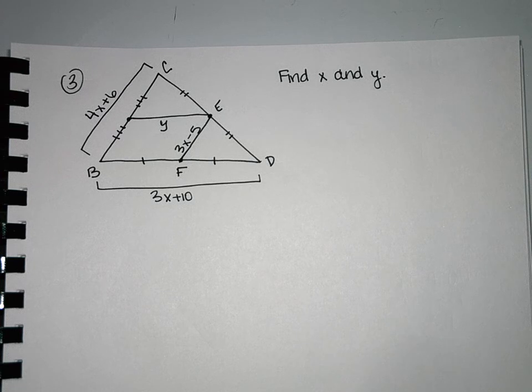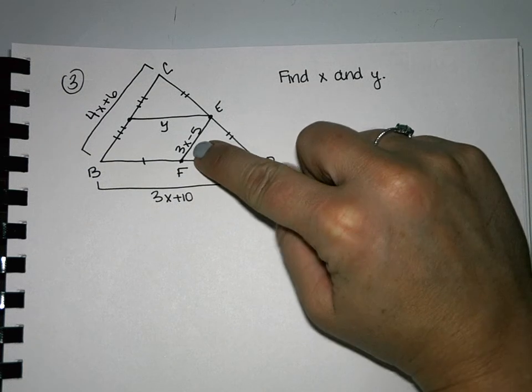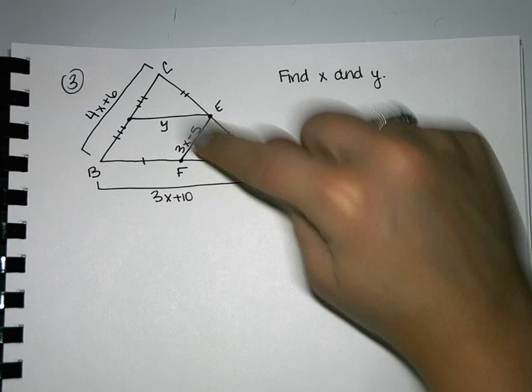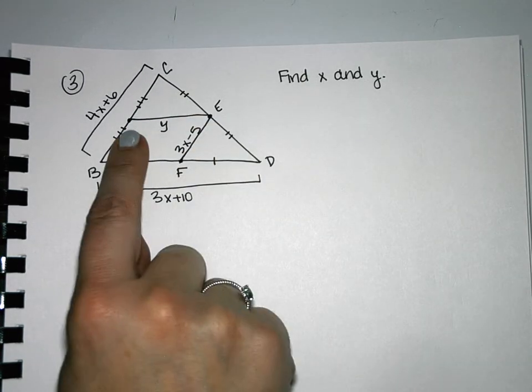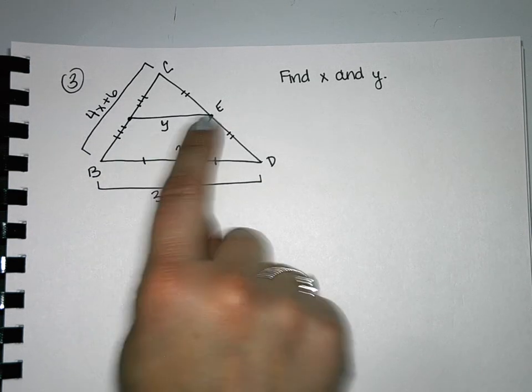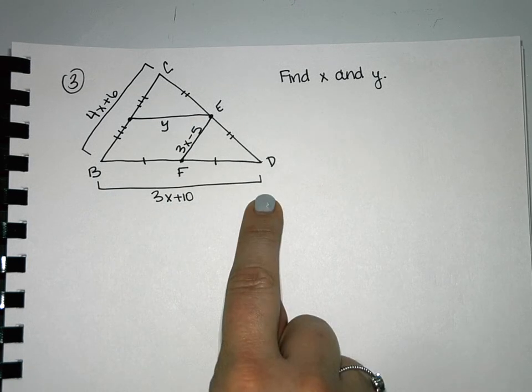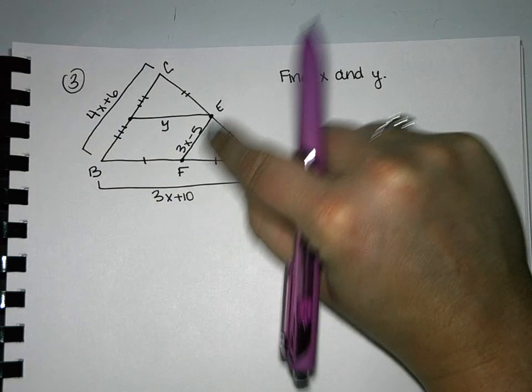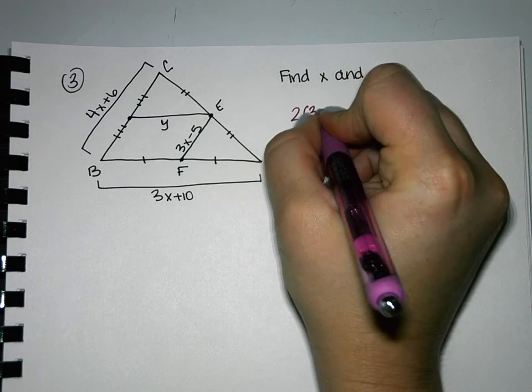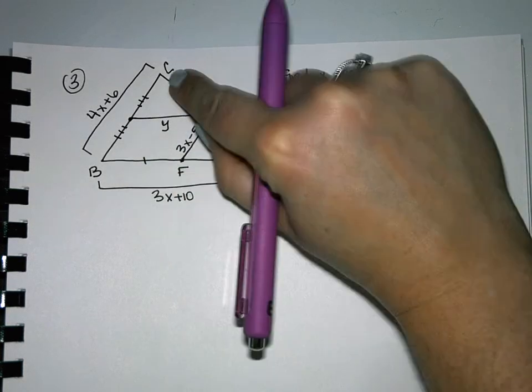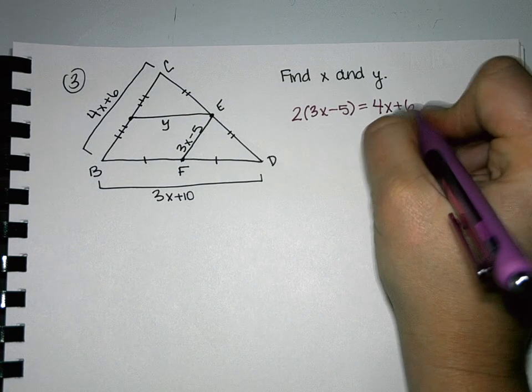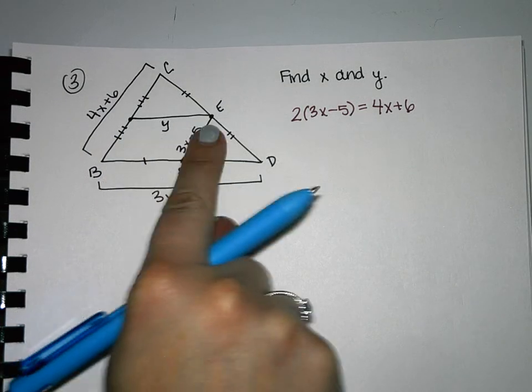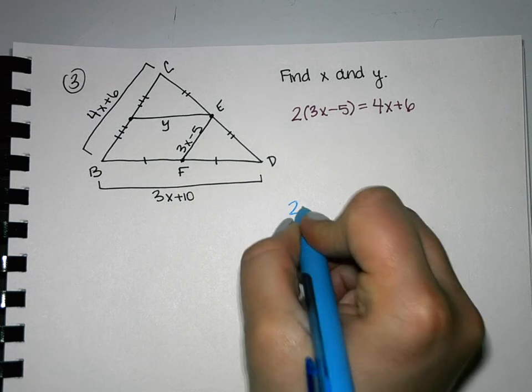Okay, so here we're going to find x and y. So what do we know about EF? What kind of line is that? It's a midsegment. So if EF is a midsegment, then I know if I double it, it will equal CB. I also know that this side here with y on it, that's also a midsegment, and if I double it, it will equal BD. So to start us off, we're going to set up both of those equations. So the first one, if I take EF, the length of the midsegment, and double it, it's going to equal 4x plus 6. And then I also know that this side here with y on it, if I double it, it will equal BD.